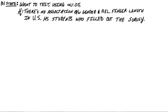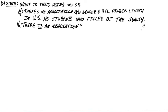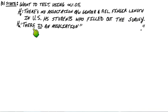The alternative hypothesis says there is an association. It's really important to mention not only the two characteristics — gender and relative finger length — but also to be very specific about the population you're speaking to. In this case, U.S. high school students who actually filled out the survey.